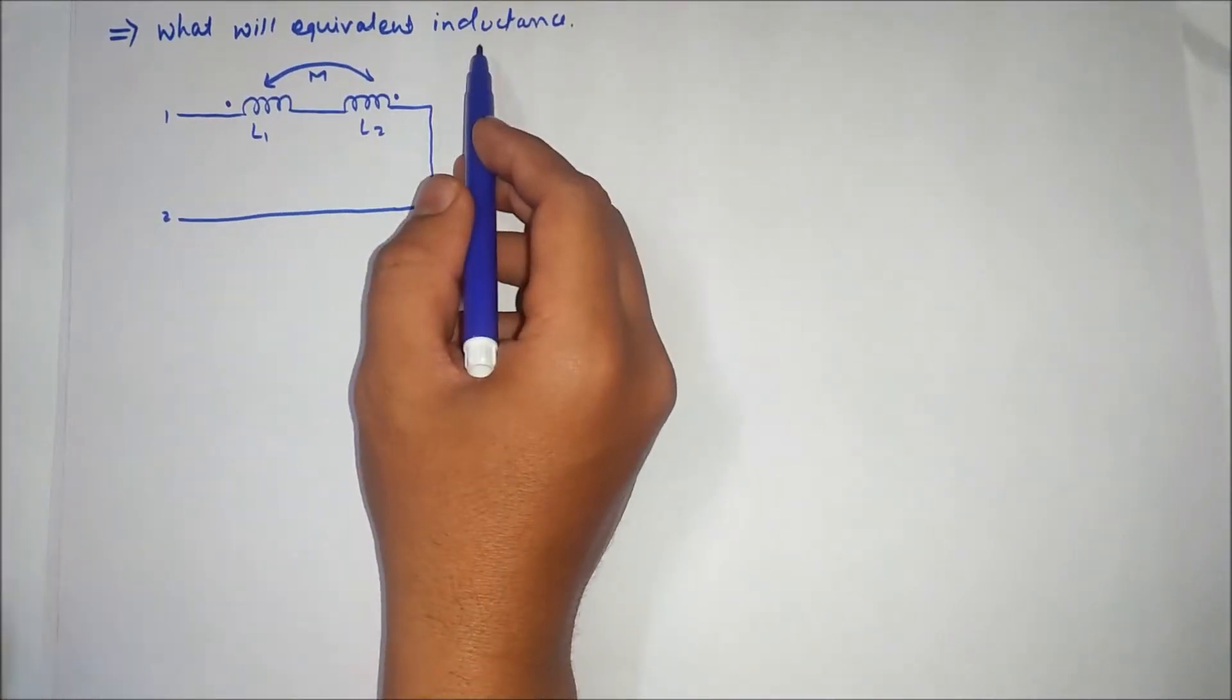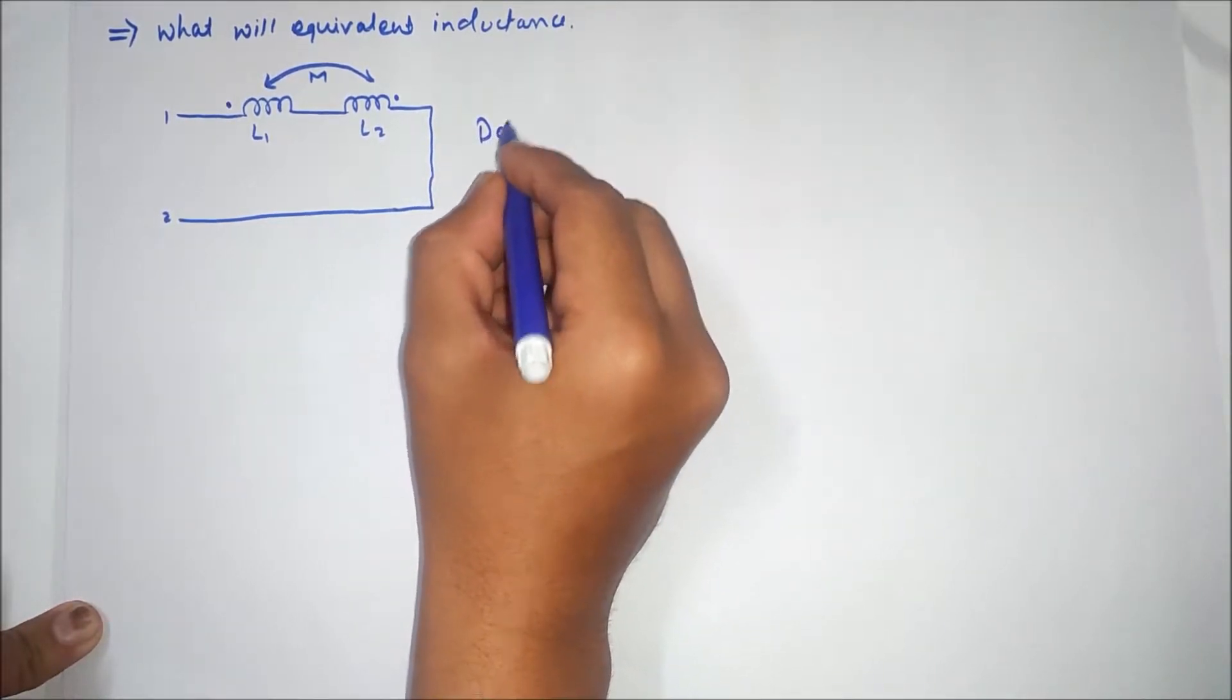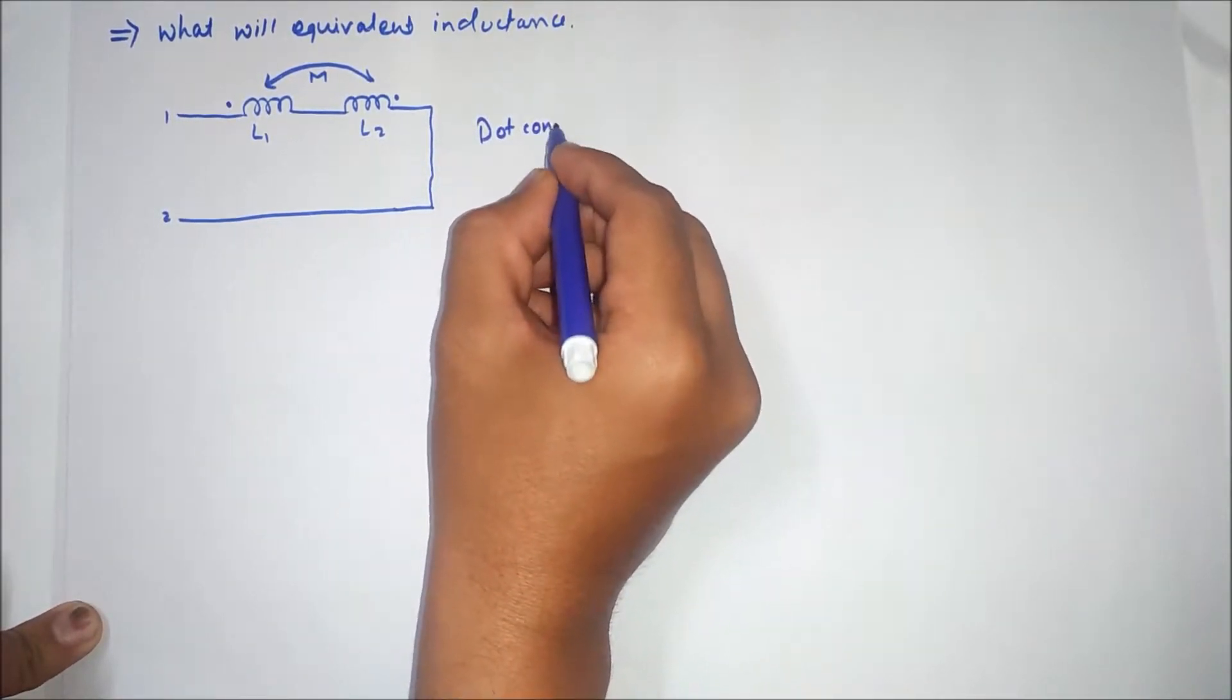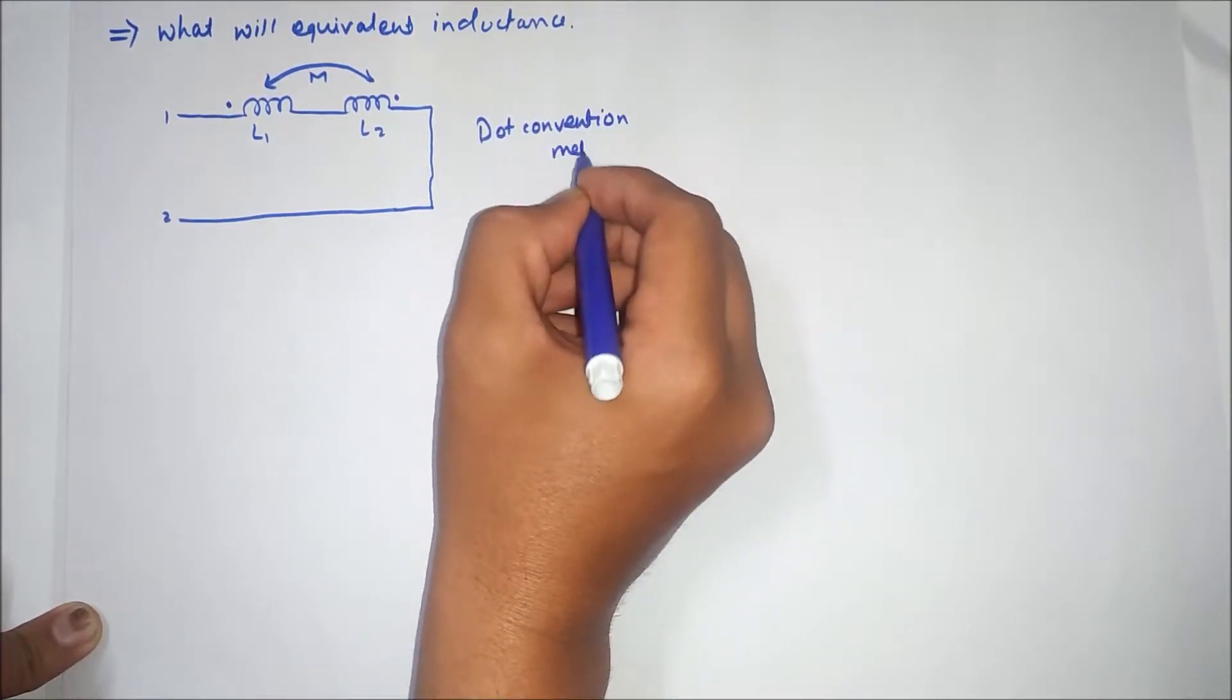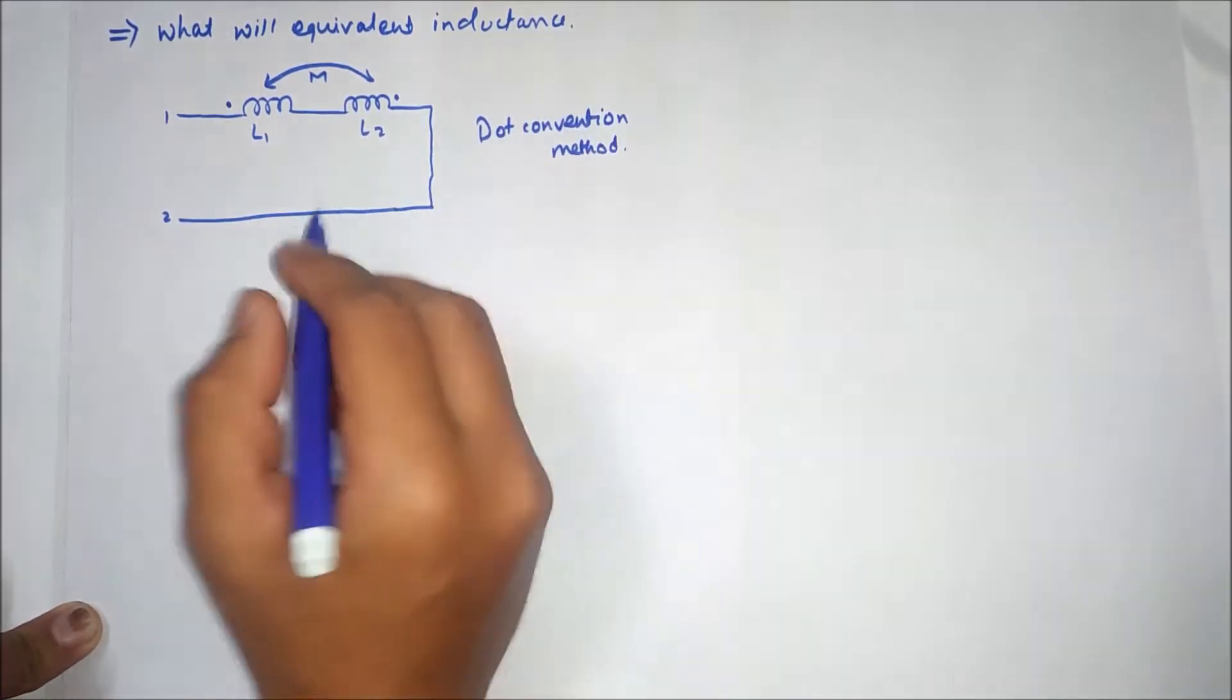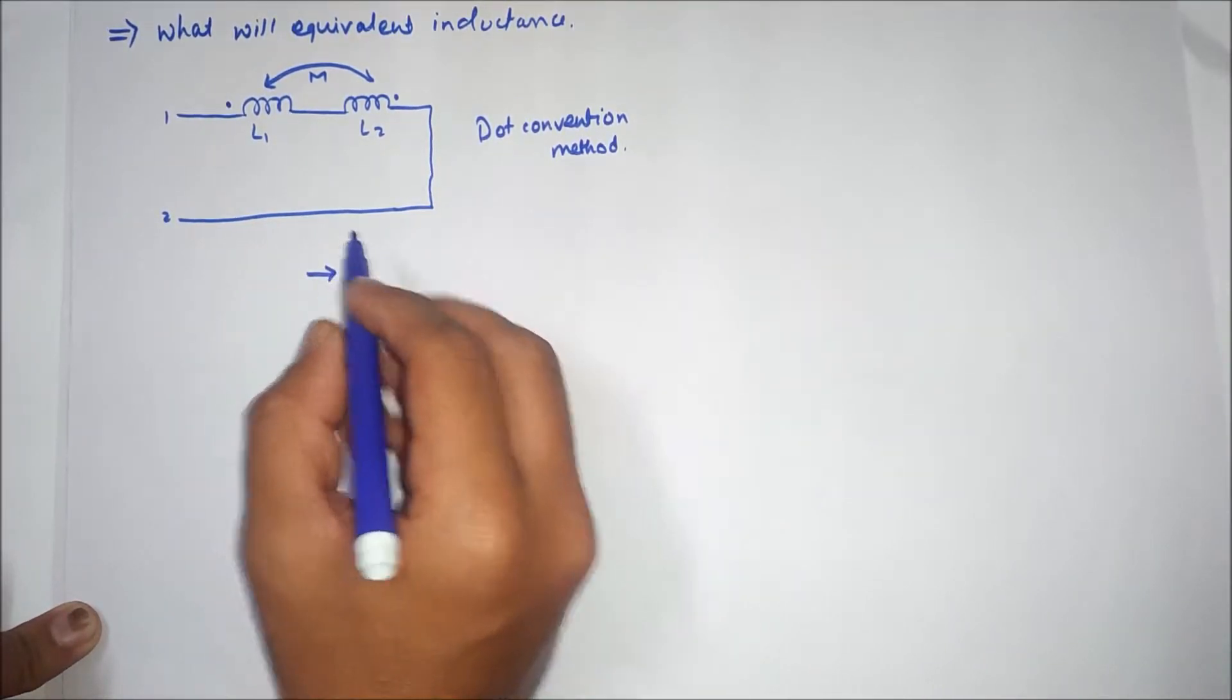What will be the equivalent inductance? So this is a dot convention method. First we will see what the dot rules denote.